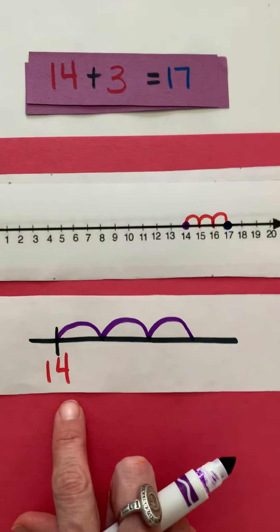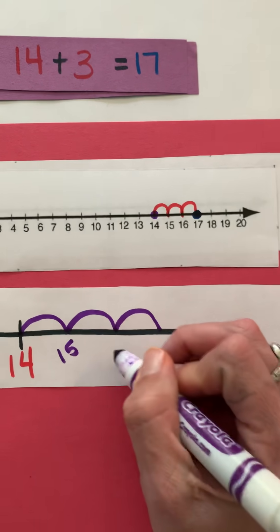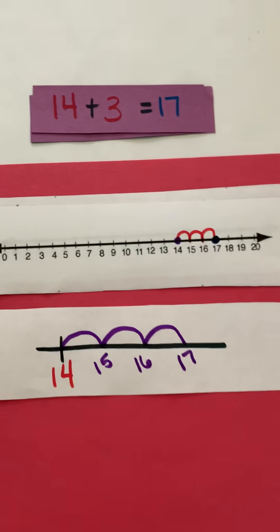Now then I have to go back, and I know this is 14, so this would be 15, 16, and then 17 would be my sum.